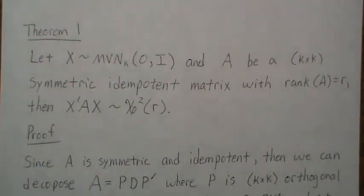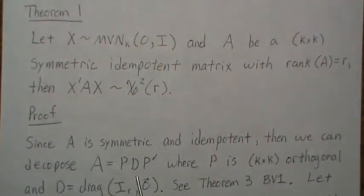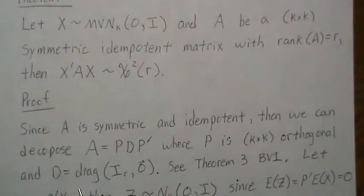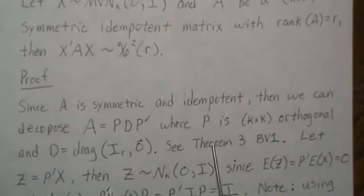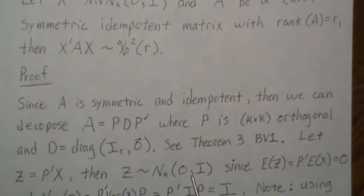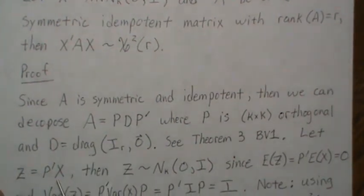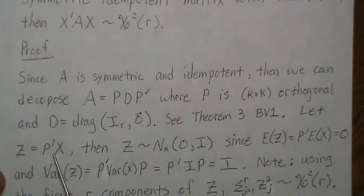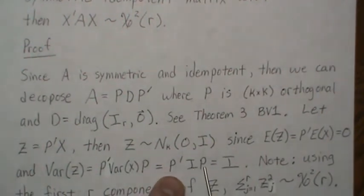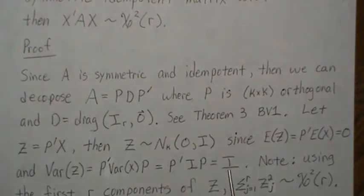Since A is symmetric and idempotent, it can be decomposed as A = PDP', where P is an orthogonal matrix and D is diagonal with R ones down the diagonal and zeros elsewhere — see theorem 3 in background video 1. Let Z = P'X. Then Z is multivariate normal zero I. Z is a linear combination of normal random variables, so it is itself normal. The mean is zero, and the variance of Z is P' I P = I, since P is orthonormal.